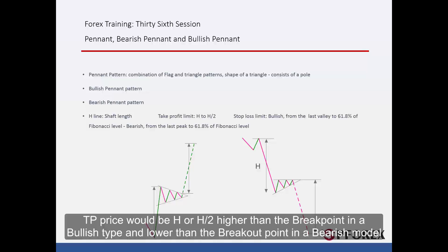TP price would be H or H/2 higher than the breakout in a bullish type, and lower than the breakout point in a bearish model.